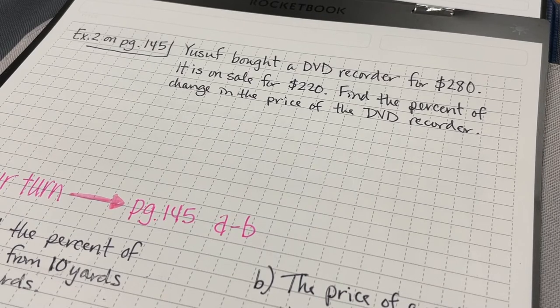Example 2 on page 145 says that Yusef bought a DVD recorder for $280. It's now on sale for $220. Find the percent of change in the price of the DVD recorder.